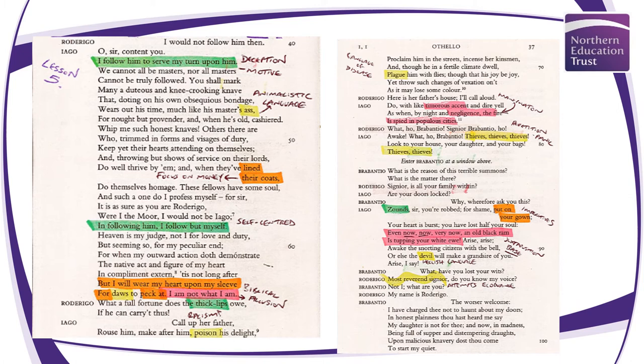Rather than looking at the whole of Act 1, we're going to look at individual key moments and scenes useful from an A-Level perspective and the assessment objectives. Here we pick up with Roderigo and Iago having a conversation. Before we even read the words, just look at the words on the page — the amount Iago is speaking in contrast to Roderigo. Roderigo has short little lines while Iago has this enormous piece of speech; he dominates the page because he ultimately dominates the play.